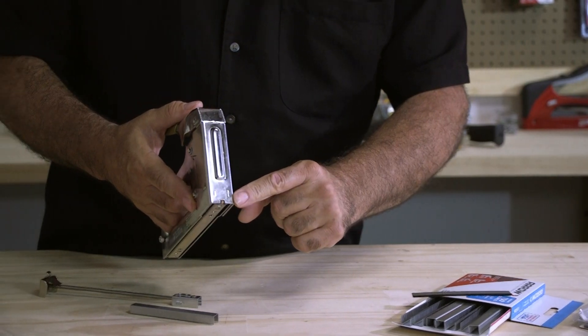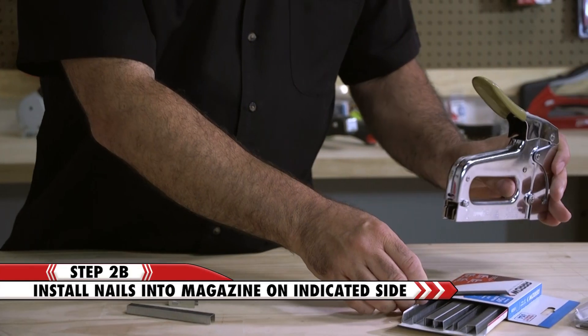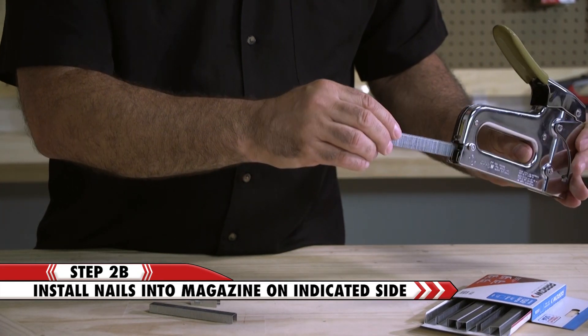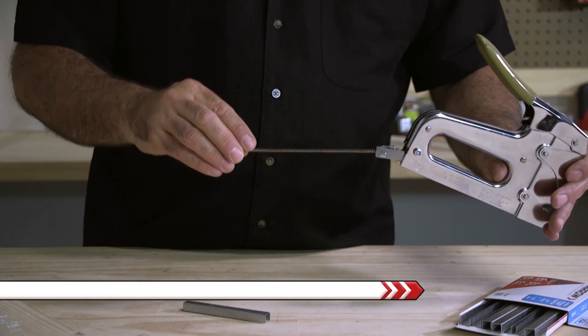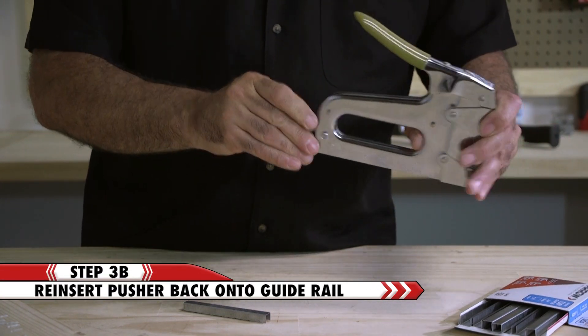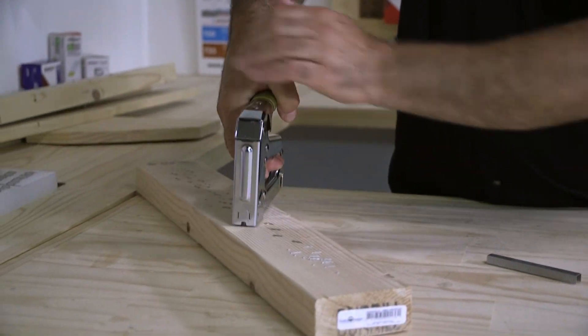Notice the brad nail indicator on the front of the tool. Insert your brad nails on this side of the magazine. Reinsert the pusher until it locks in place and now you're ready to fire brad nails from your T50 PBN.